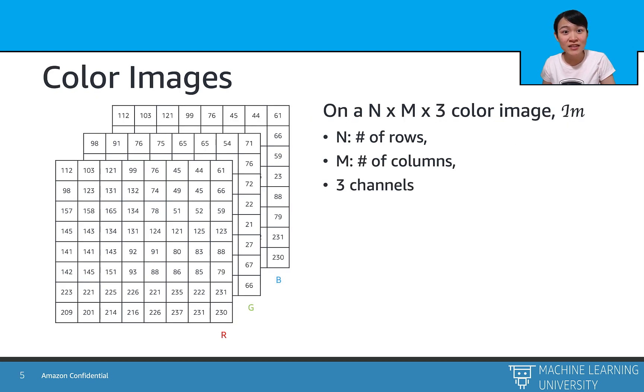Here is how the computer reads a color image. It first splits the given image into three channels: red, green, and blue. And then it's represented as a 3D matrix with shape of n by m by 3.